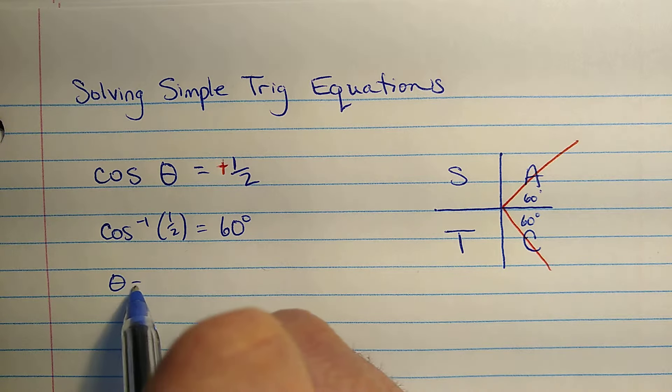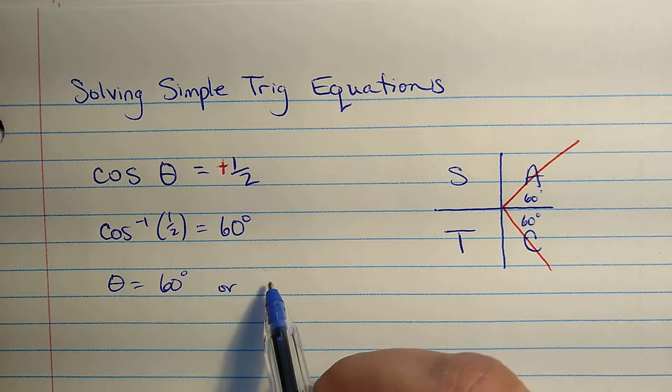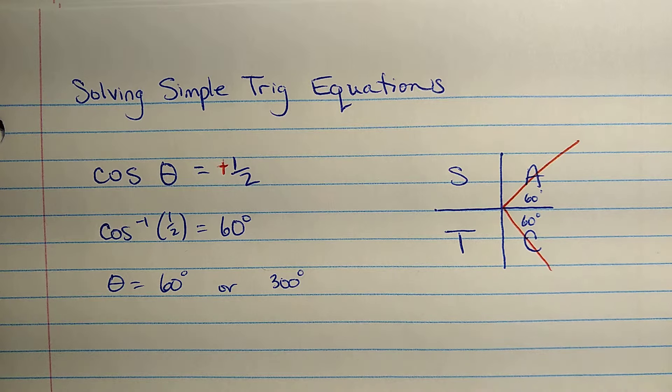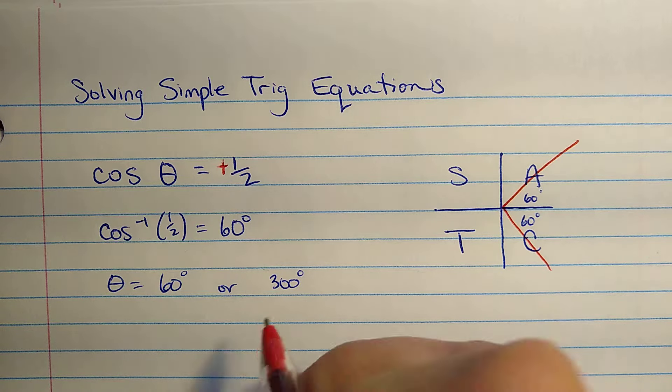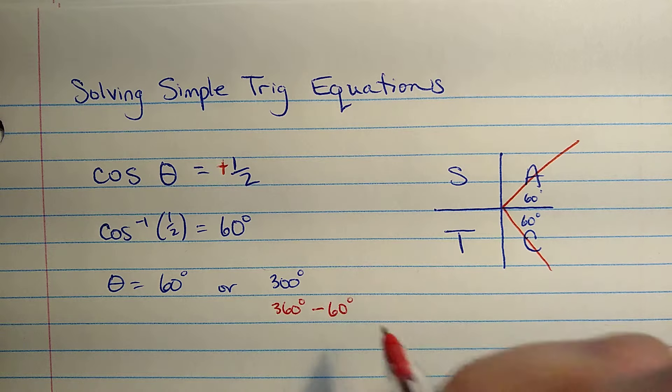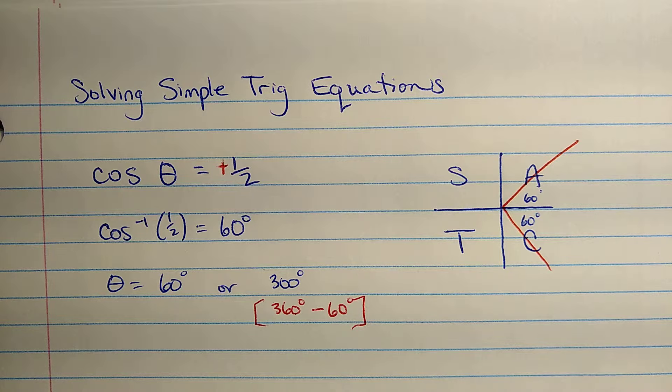So one of our solutions is 60 degrees, and the other solution is 360 minus 60, or 300 degrees. Let me just write that down how I got that. That was 360 degrees minus the acute angle, 60. That's where that came from. So those are the two solutions to this equation.